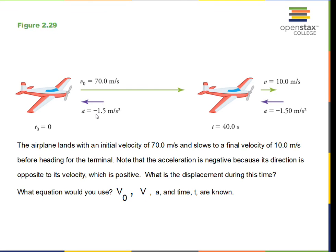Here's an airplane, 70 meters per second off to the right, decelerating at minus 1.5 meters per second squared. Time of 40 seconds. We end up at 10 meters per second, and we want to calculate the displacement. What equation would we use? We have the initial velocity, that's 70. We have the final velocity, that's 10. We have acceleration minus 1.5. We have the time of 40 seconds, and all the units are proper. We have meters per second, meters per second, meters per second squared. We have seconds for the time. What equation would you use? Pause, take a look at the possible equations and pick one.